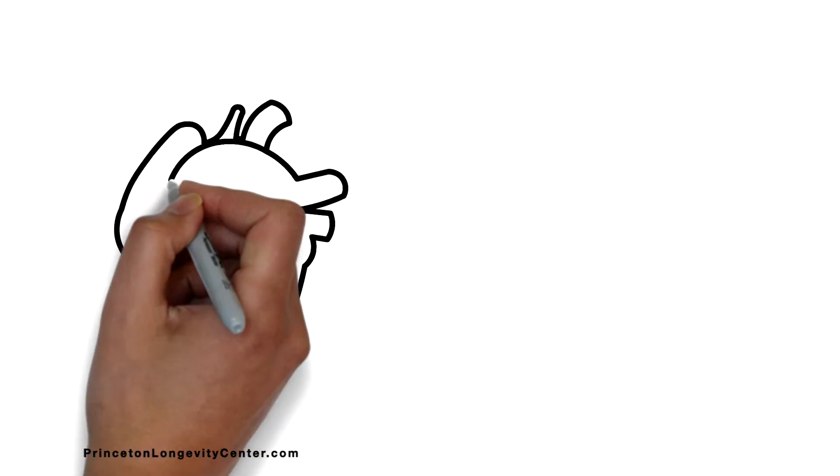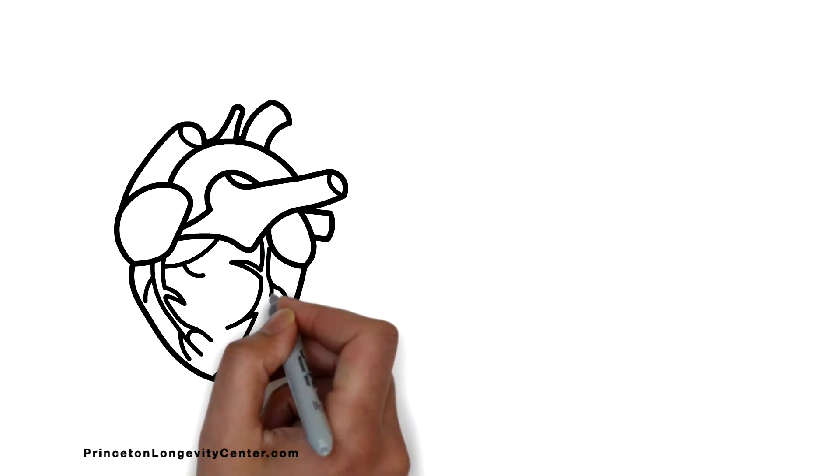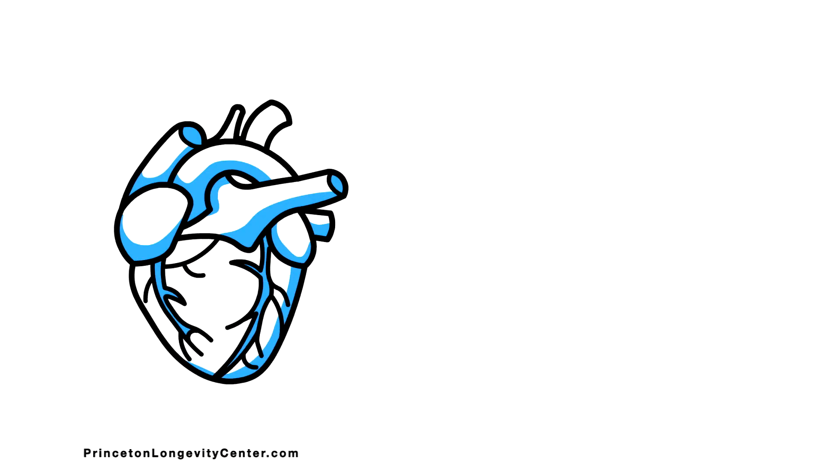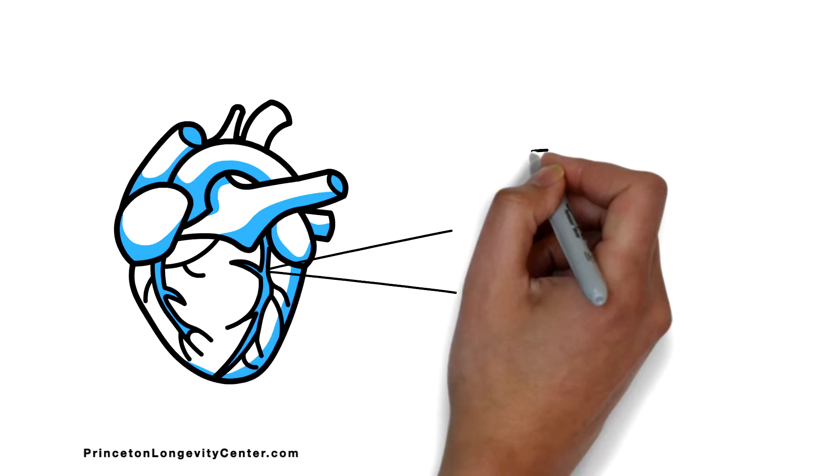The coronary arteries actually sit on the outside of the heart muscle itself. If we were to take a closer look at one of these coronary arteries here, it would look something like this on the inside.